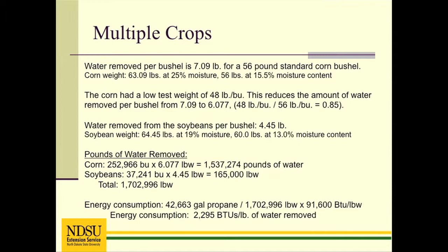Since the corn has a test weight of 48 pounds, the amount of water is adjusted for test weight to be 6.08 pounds per bushel. The water removed from the soybeans is calculated to be 4.45 pounds per bushel. The total weight of water removed is the value calculated for corn added to the value for soybeans. The gallons of propane is divided by the pounds of water and multiplied by the heat content of the propane. The energy consumption in this example is 2,295 BTUs per pound of water removed.